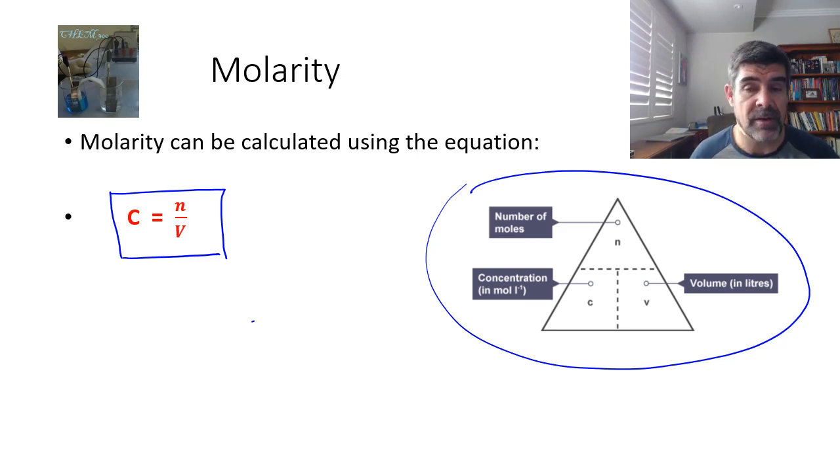So we can find concentration by dividing the number of moles by the volume. We can also find the number of moles by multiplying the concentration and the volume. One little way to try and help you remember this alternate version is that the most important thing that you would put on your CV is your name, name on your CV.